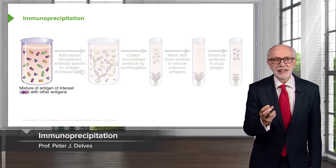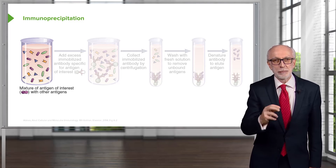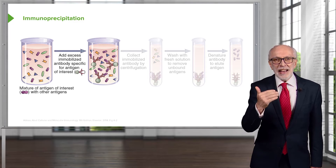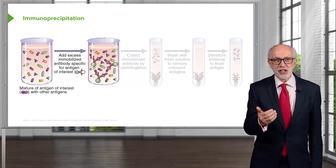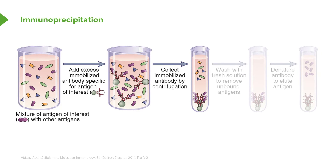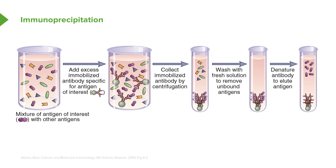In immunoprecipitation, there is a mixture of antigens with the antigen of interest but also other antigens. An excess of immobilized antibodies specific for the antigen of interest is added. This causes precipitation when the antigen of interest is bound by the antibody immobilized onto, for example, a particle. These immobilized antibodies bound to the antigen of interest can then be deposited at the bottom of a test tube using centrifugation. They can then be washed with a fresh solution to remove any unbound antigen, and then the antibody denatured to release or elute the antigen of interest, thereby isolating that specific antigen from the mixture.